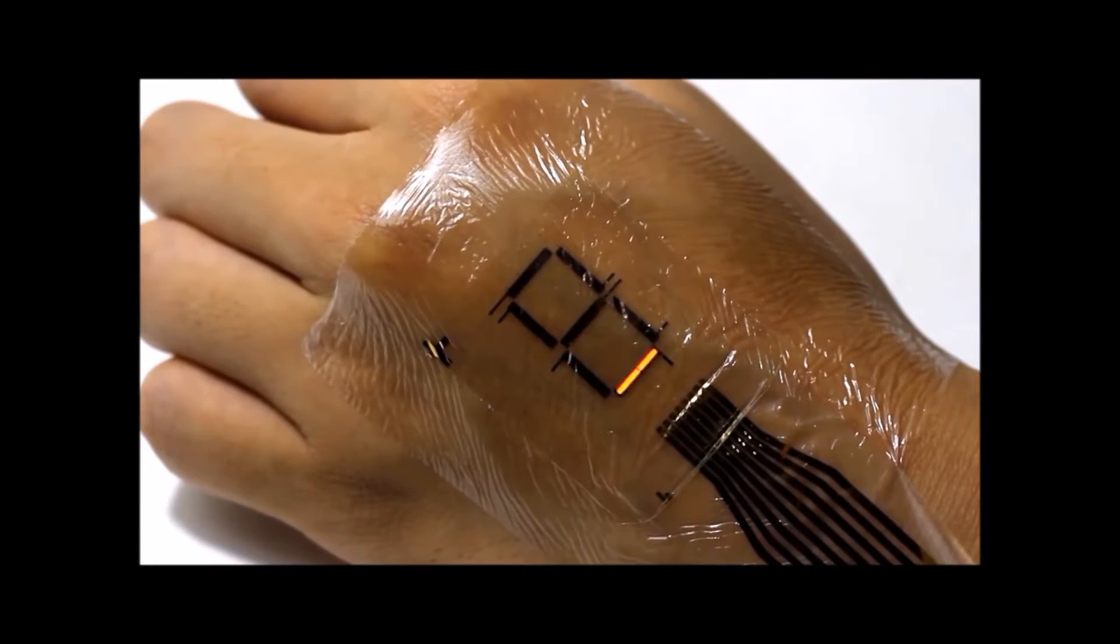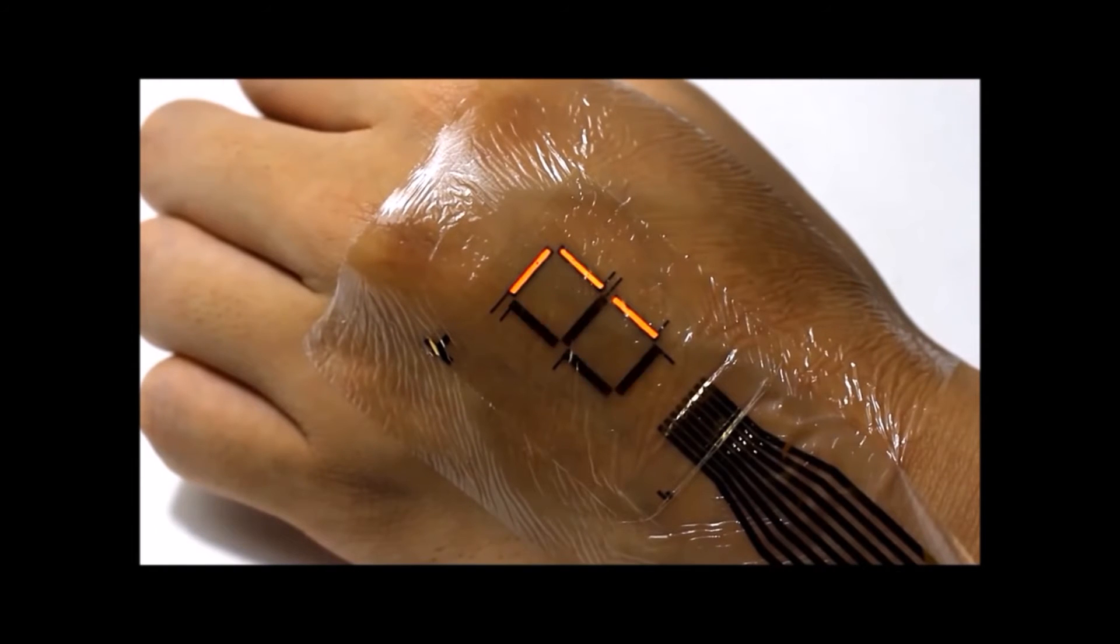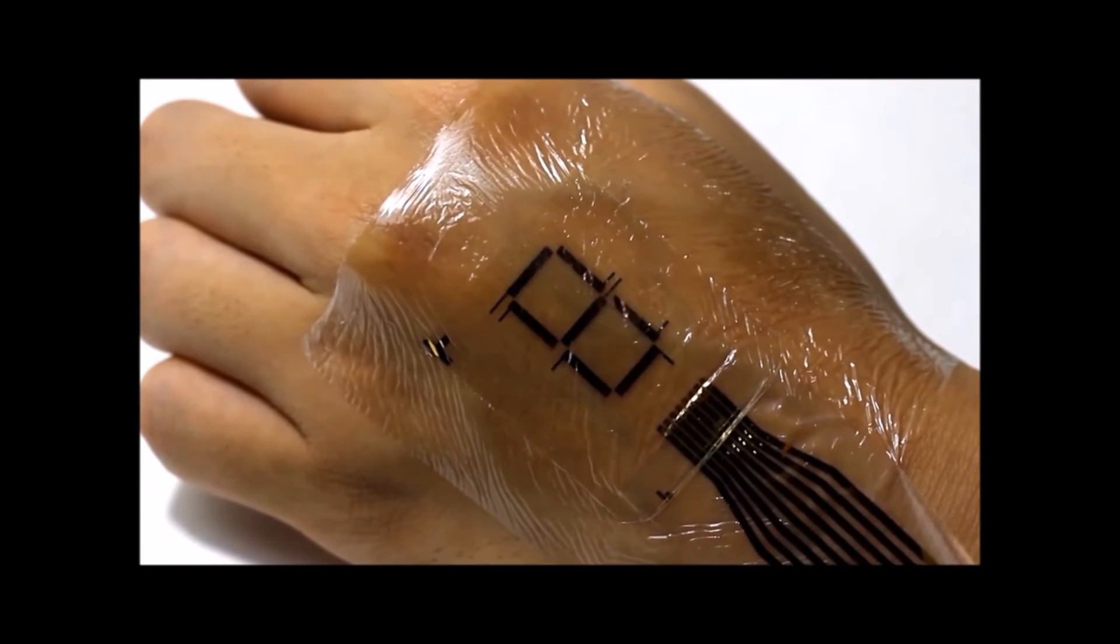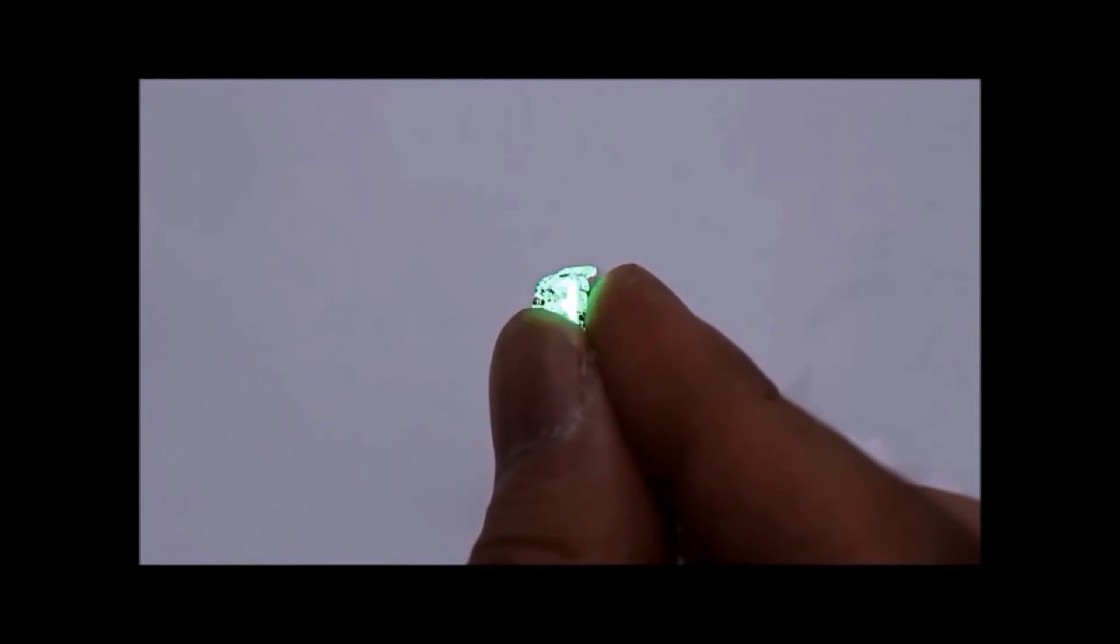By integrating green and red PLEDs with OPDs, scientists fabricate an ultra-flexible reflective pulse oximeter. The device unobtrusively measures the oxygen concentration of blood when laminated on a finger.